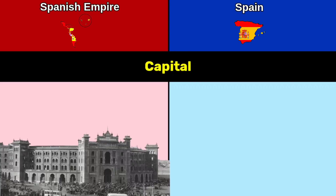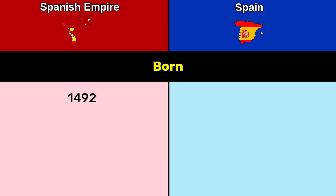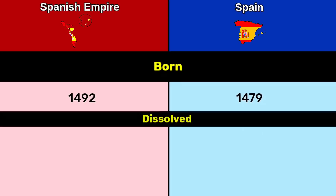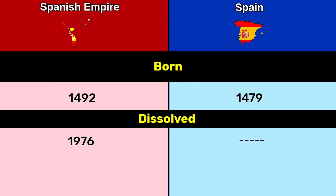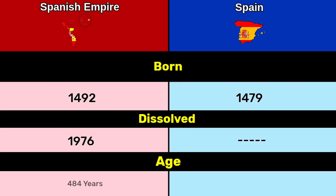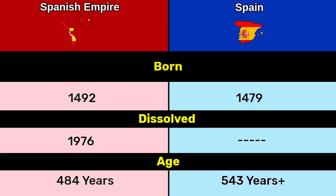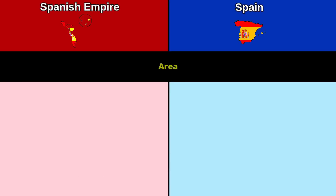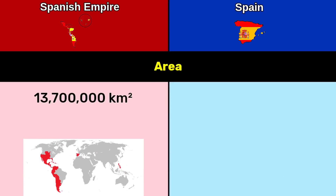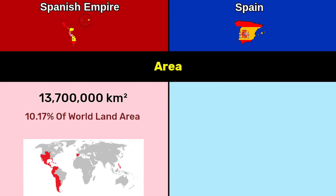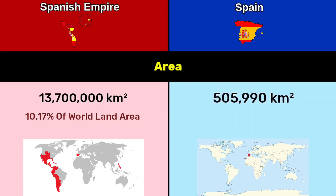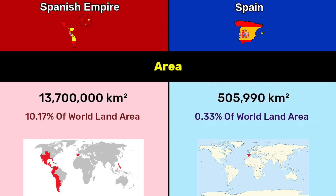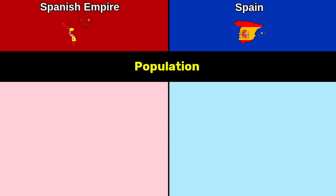Capital: Madrid for both sides. The Spanish Empire was born in 1479 and dissolved in 1976, making its age 543 years. Spain was born in 1492 and is not dissolved, age 484 years. Area: Spanish Empire 13.7 million square kilometers, 10.17% of world land area. Spain: 505,990 square kilometers, 0.33% of world land area.